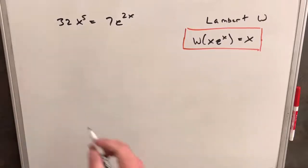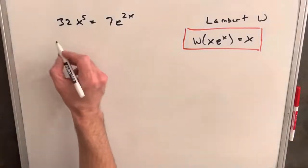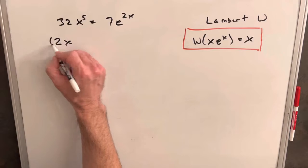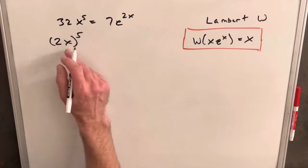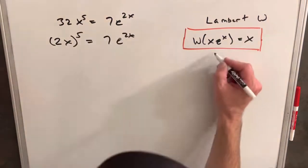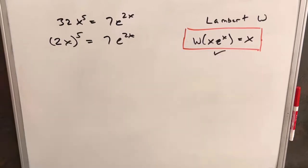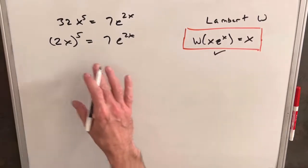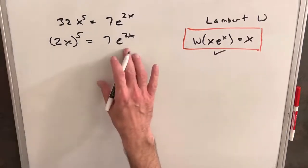So to get started, we're going to notice 32 is 2 to the 5th. So I can actually rewrite this as 2x to the 5th. And what we're going to want to do is we're going to want to utilize our formula over here. So we want to get our x around the e.